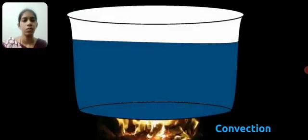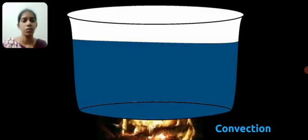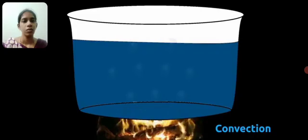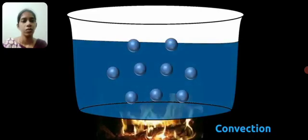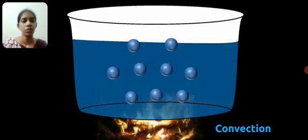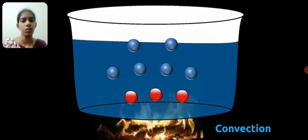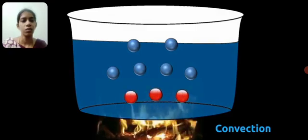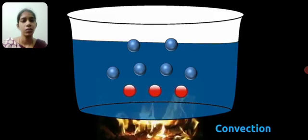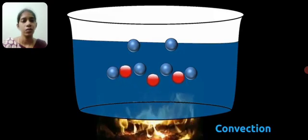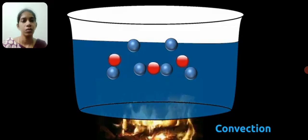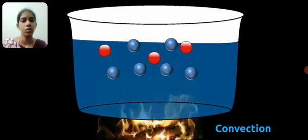In the convection method, movement of particles of liquid or gas cause transfer of heat from the heat source. Let's take an example of a pot of water. As we heat it, water particles near the heat source get heated first. We know that addition of heat causes increase in movement of particles. Thus these particles move randomly and a relatively empty space is formed.